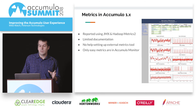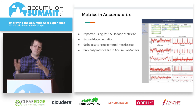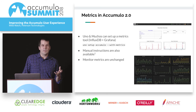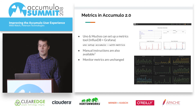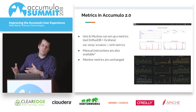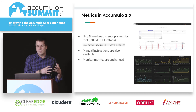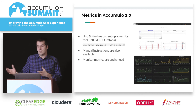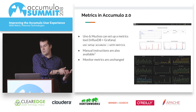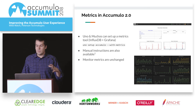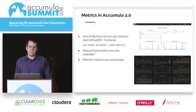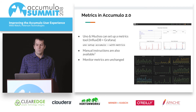In 2.0, we've kept the monitor and still have these same interfaces. But through Uno and Muchos, and also with instructions, we've made it easier for people to set up an external metric service. With Uno and Muchos, when you're setting up Accumulo, it'll also pull down and set up InfluxDB and Grafana — the current implementation — and actually have Accumulo send metrics to them. You could also work with other tools. This is nicer than the current monitor because you can have metrics for 30 days, drill down, and start creating more interesting graphs with the existing metrics.